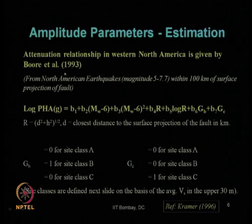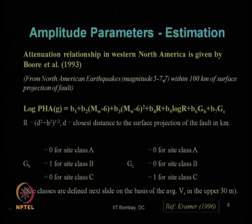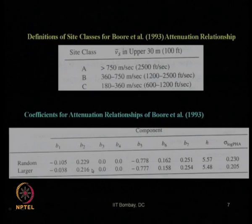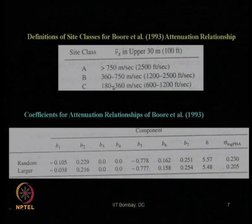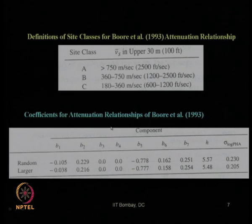Boore et al. in 1993 proposed an advanced attenuation relationship for peak horizontal acceleration for the western North America region, using historical earthquake records and extending the distance to 100 kilometers. They classified site class based on average shear wave velocity in the top 30 meters from the ground surface, giving rocky site, hard or stiff soil, and soft soil categories. Coefficients b1, b2, b3 up to h with corresponding standard deviations were proposed for each site class.